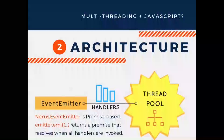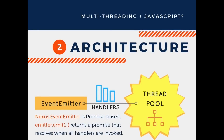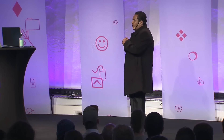We have the event emitter. Unlike Node, the event emitter is not mute — you can interact with it. The event emitter is promise-based in Nexus. When you call emitter.emit and pass an event, you get back a promise. That promise only resolves after all handlers are finished resolving. So you can chain events — you can do that easily, which I don't think you can do with Node.